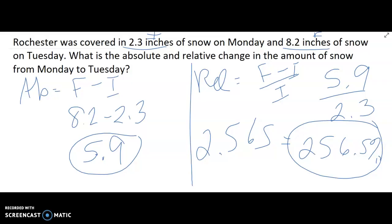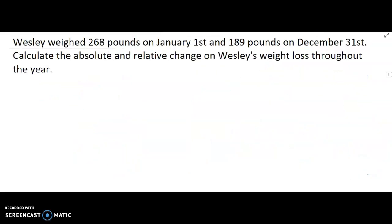Wesley weighed 268 pounds on January 1st and 189 pounds on December 31st. Calculate the absolute relative change on Wesley's weight loss throughout the year. So where did he end up? We know we're taking the new minus the old. So his new weight minus his old weight gives us negative 79. There was a decrease in his weight. That's noted by the negative in front of that number. So Wesley lost 79 pounds throughout the year. Good job, Wesley.